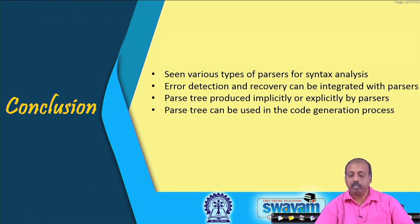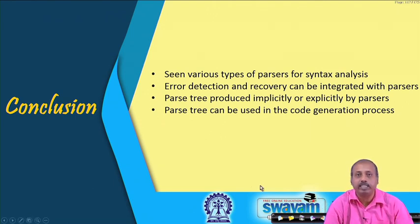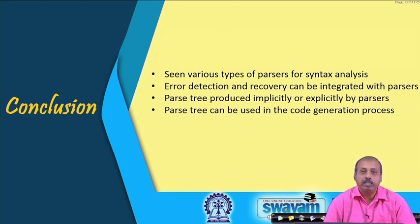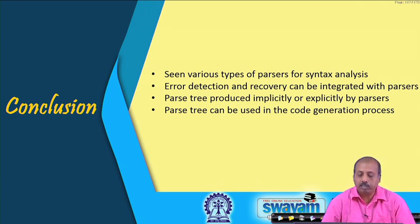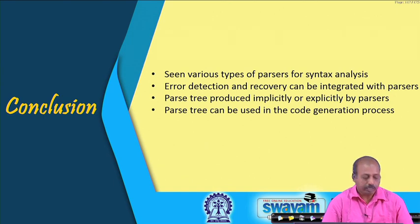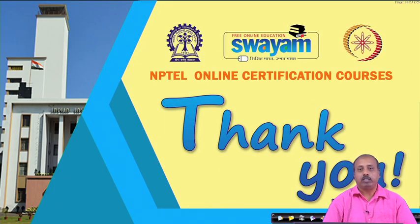To conclude, we have seen various types of parsers for syntax analysis, error detection and recovery integrated into parsers, and how parse trees can be produced implicitly or explicitly. Parse trees can be used for code generation as seen in the syntax directed translation scheme. Code generation is done through syntax directed translation policies, and we will look at these in detail during the intermediate code generation phase. Thank you for this part of the lecture.